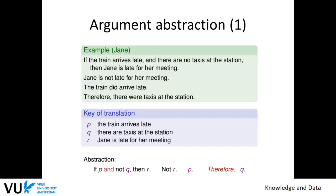Let's go through this slowly. R is that Jane is late for the meeting. P is that the train arrives late. Q is that there are taxis at the station. We know the train arrives late, so P holds. We know there are no taxis, so not Q holds. We know Jane is not late, so not R holds. From the rule 'if P and not Q then R,' combined with not R and P, we can conclude Q — namely, that there were taxis at the station.